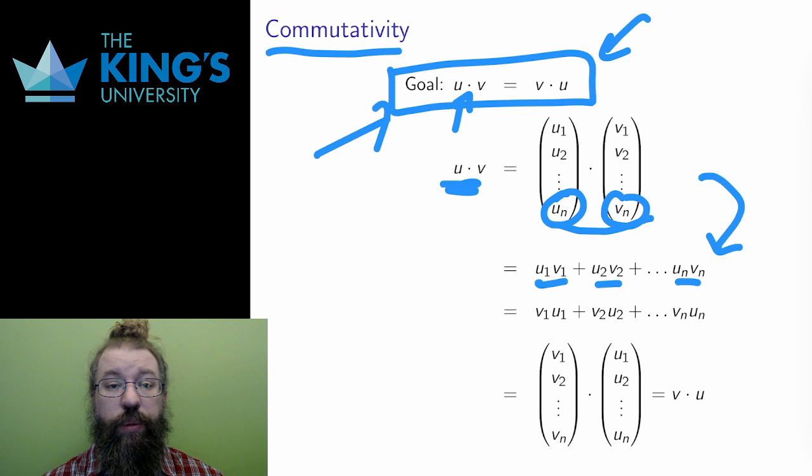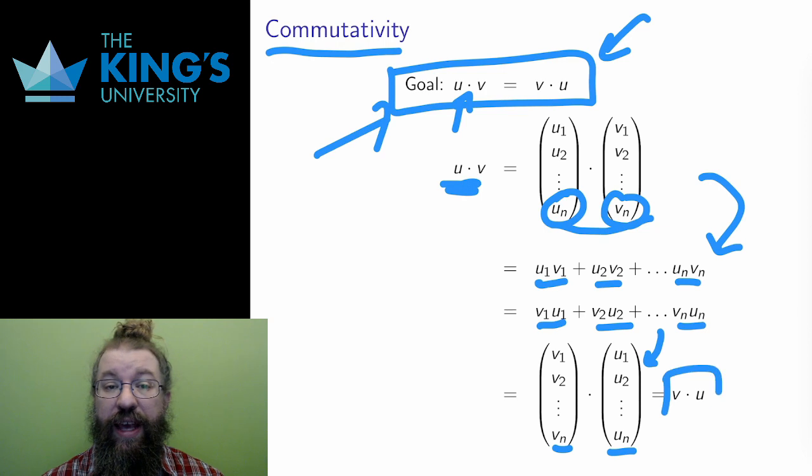Therefore, I flip all the multiplications. But then, by definition, this is just the dot product in the other order. So I can go back to components and then back to the original vectors, and I end up with v dot u, which completes the proof.